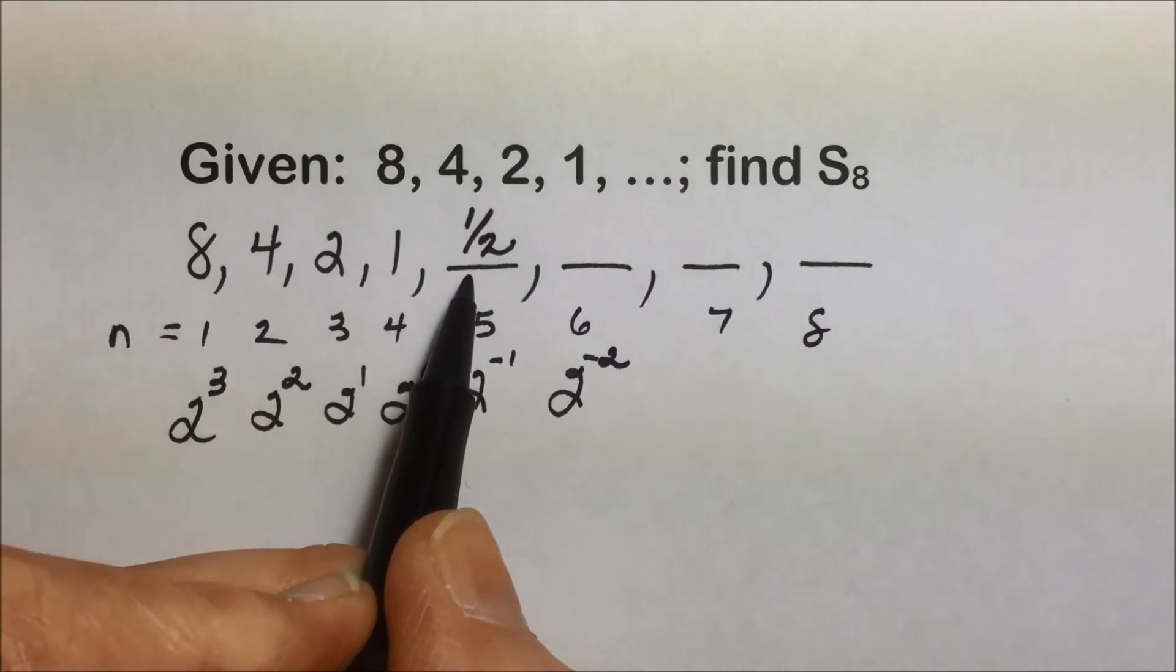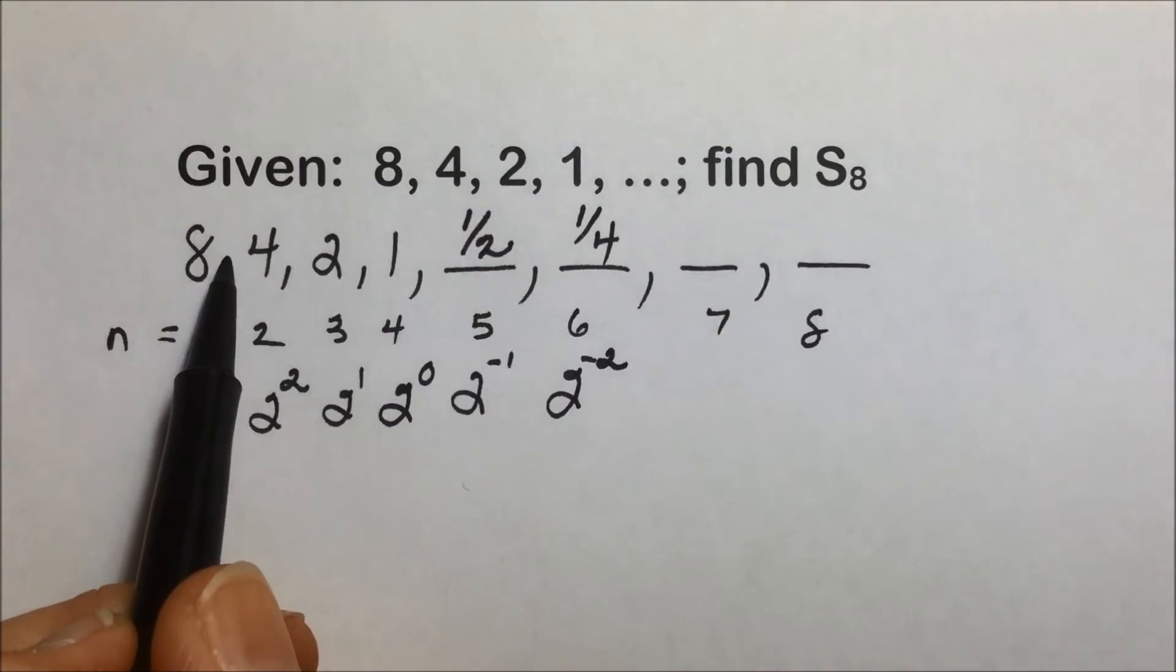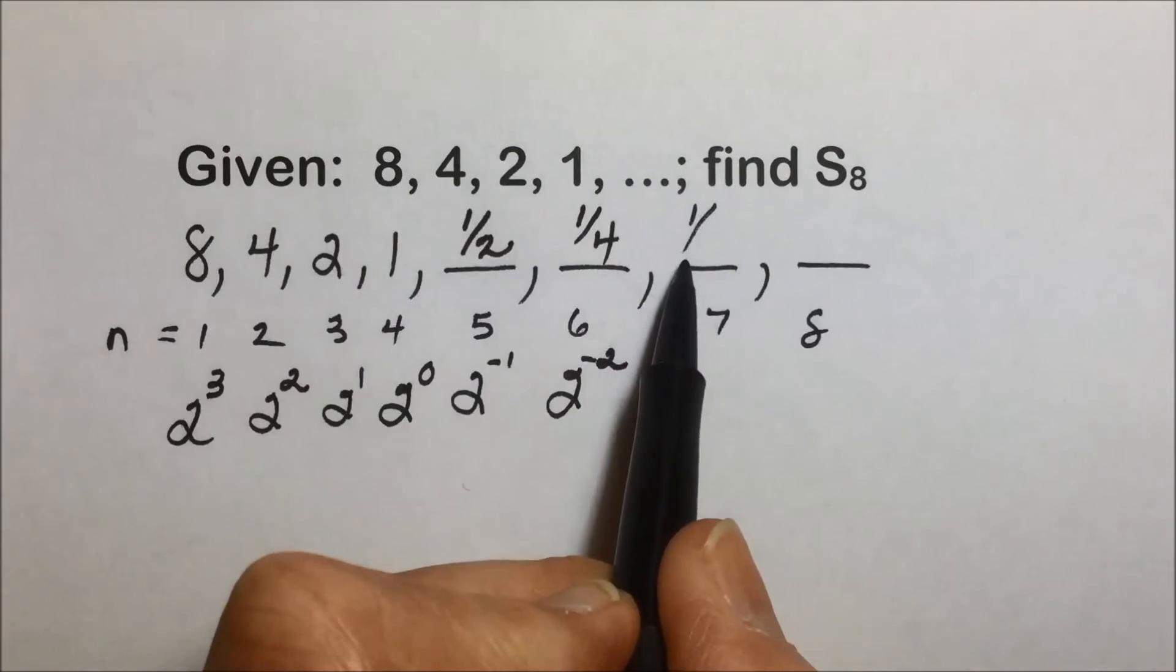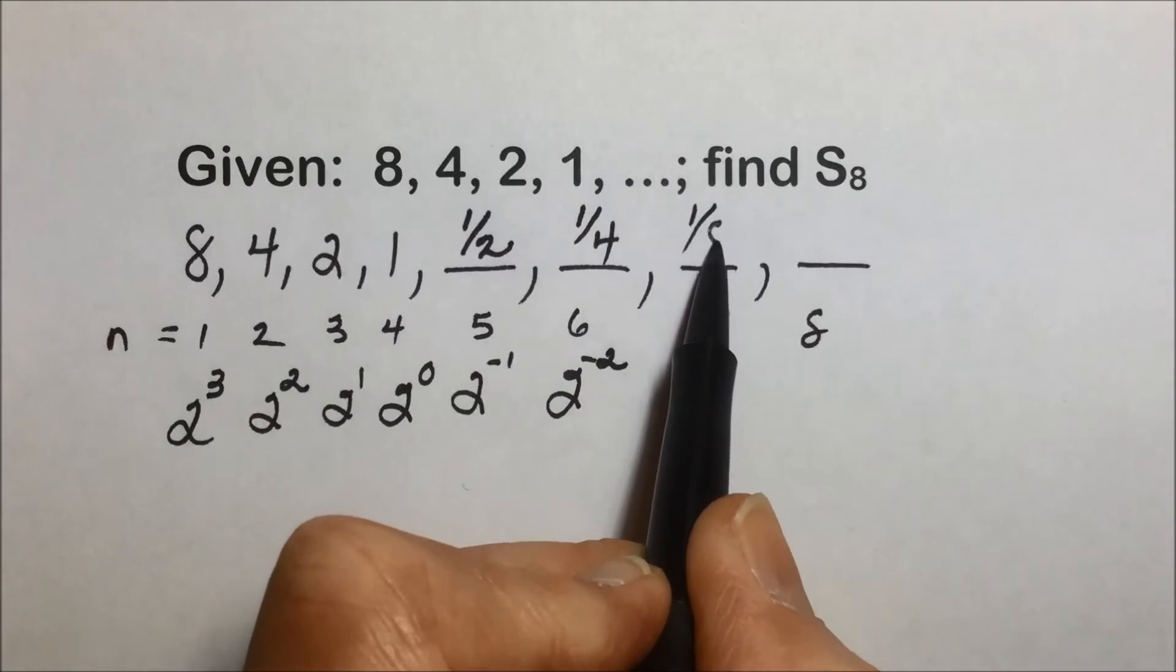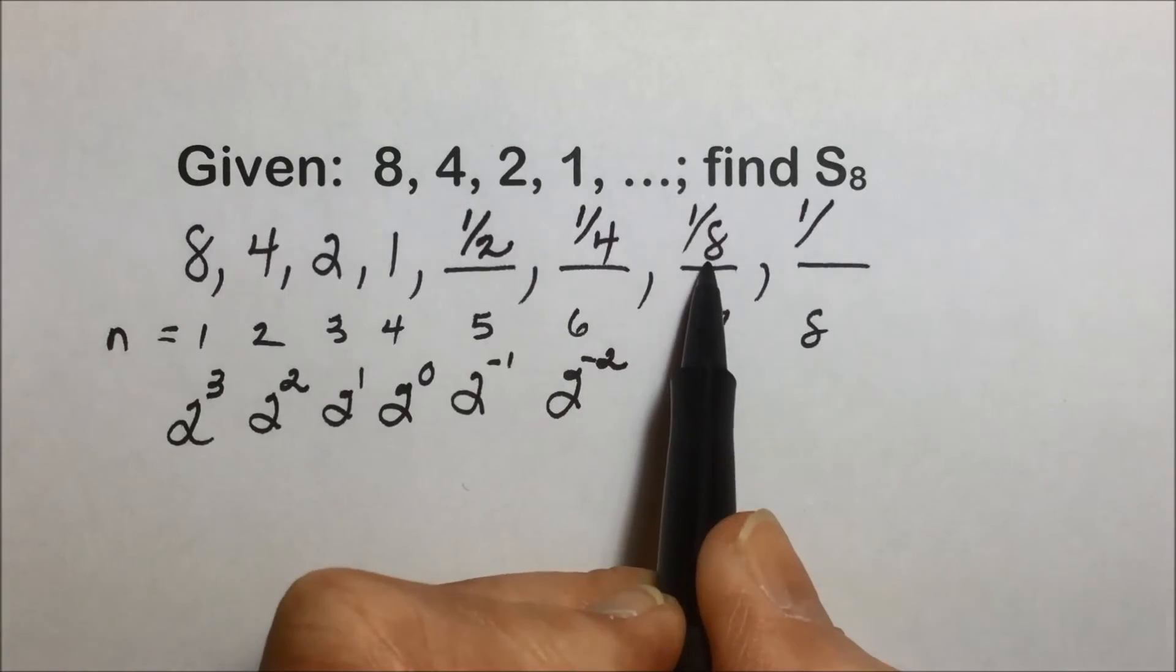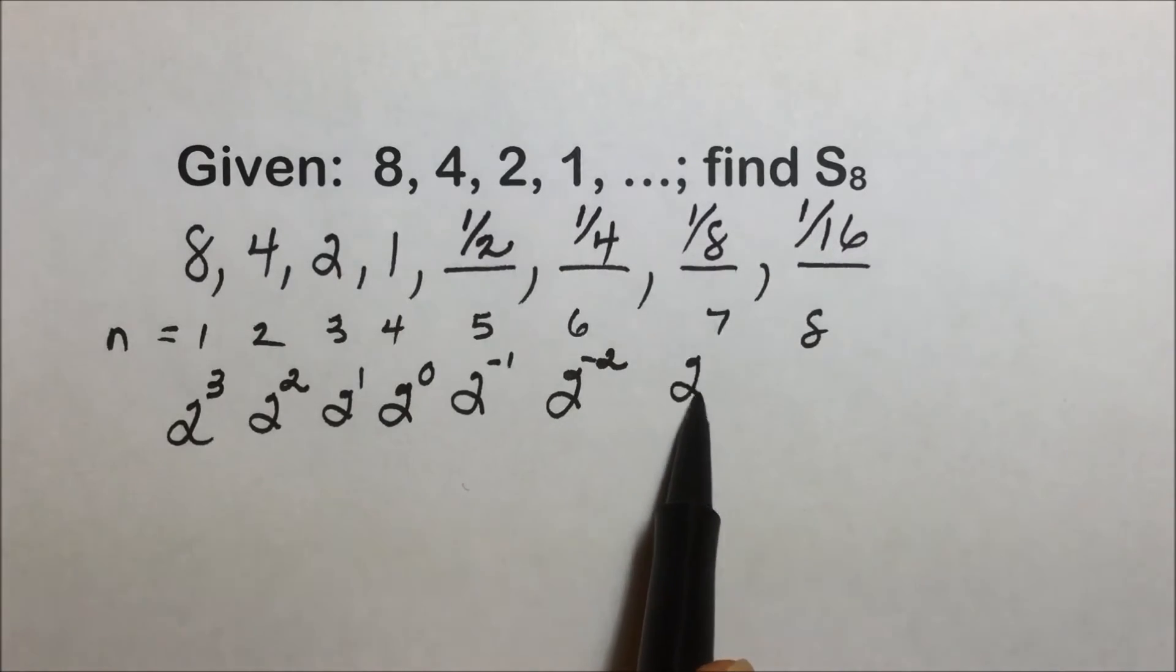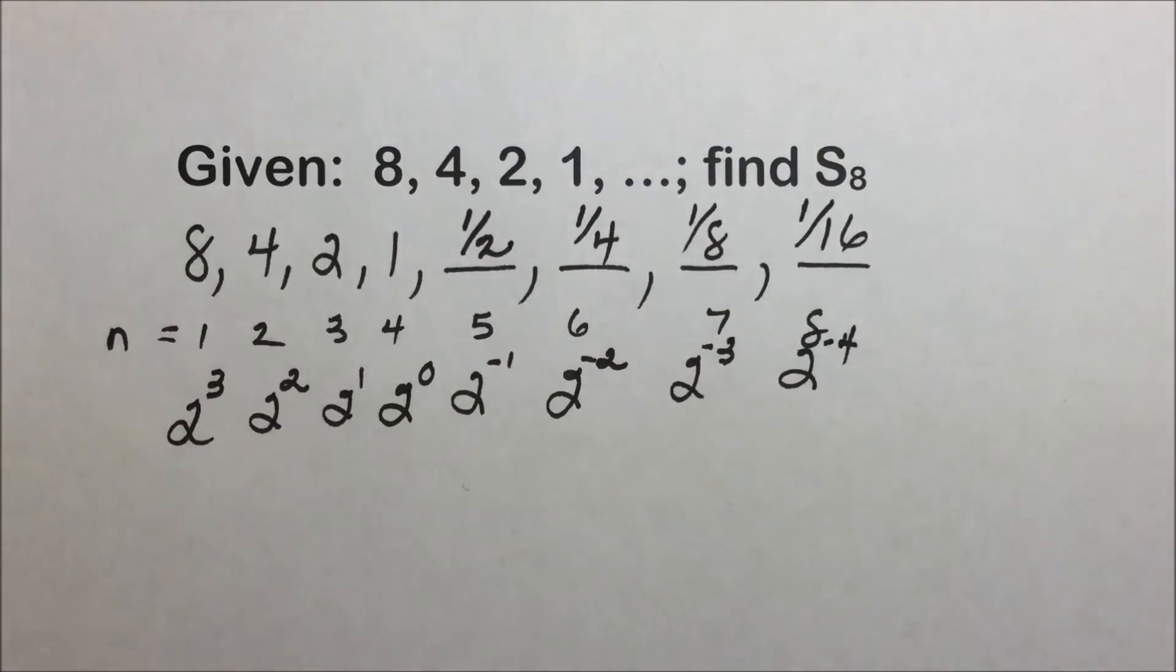Half of 1 half is 1 fourth, or 2 to the negative 2. Multiplying by a half on each one of these is generating the list. We end up with half of 1 fourth. If you multiply this by 1 half, you end up with 1 eighth. And a 1 half times 1 eighth is a 1 16th. Or we would have had 2 to the negative 3, which is 1 eighth, and 2 to the negative 4, which is 1 16th.